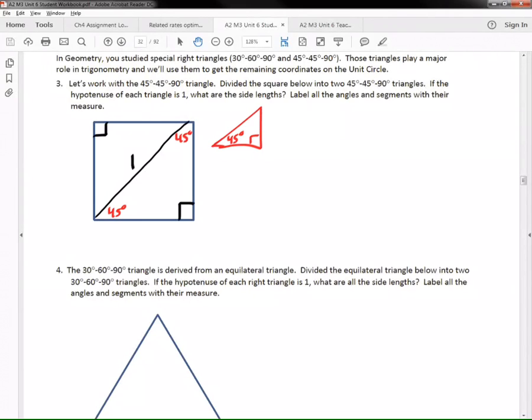So this hypotenuse side is a times the square root of two, and this is a, and this is a. You guys remember that? That little key right there? So what we do is we say, hey, that one equals a times square root of two. So if I wanted to find this side and this side, I just have to find the value of a.